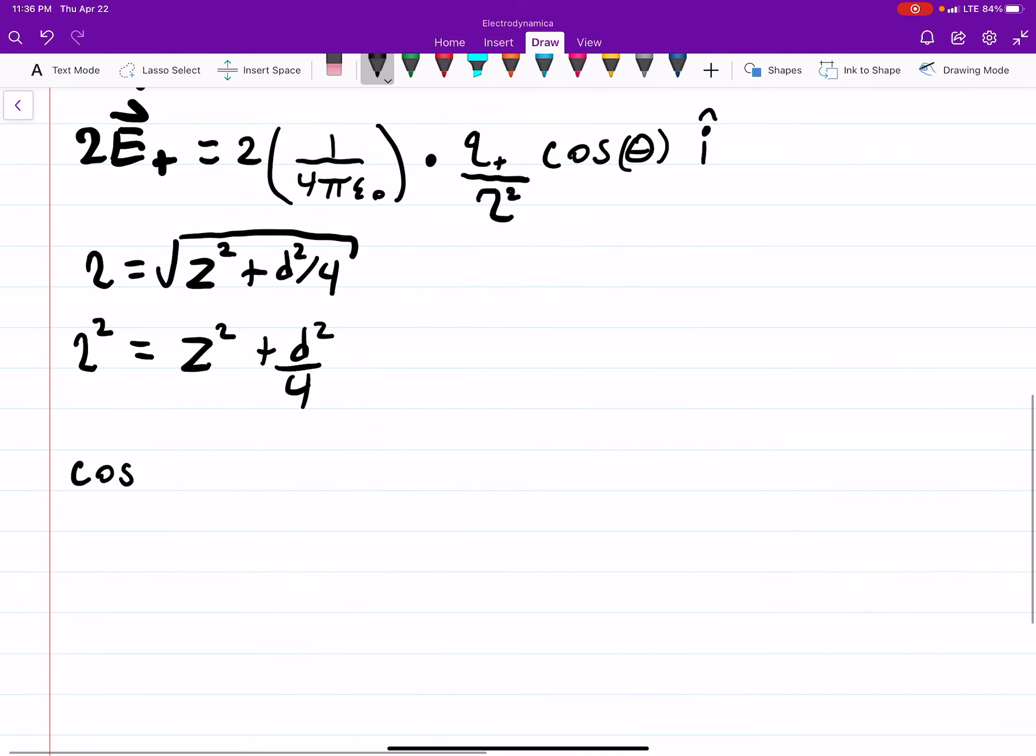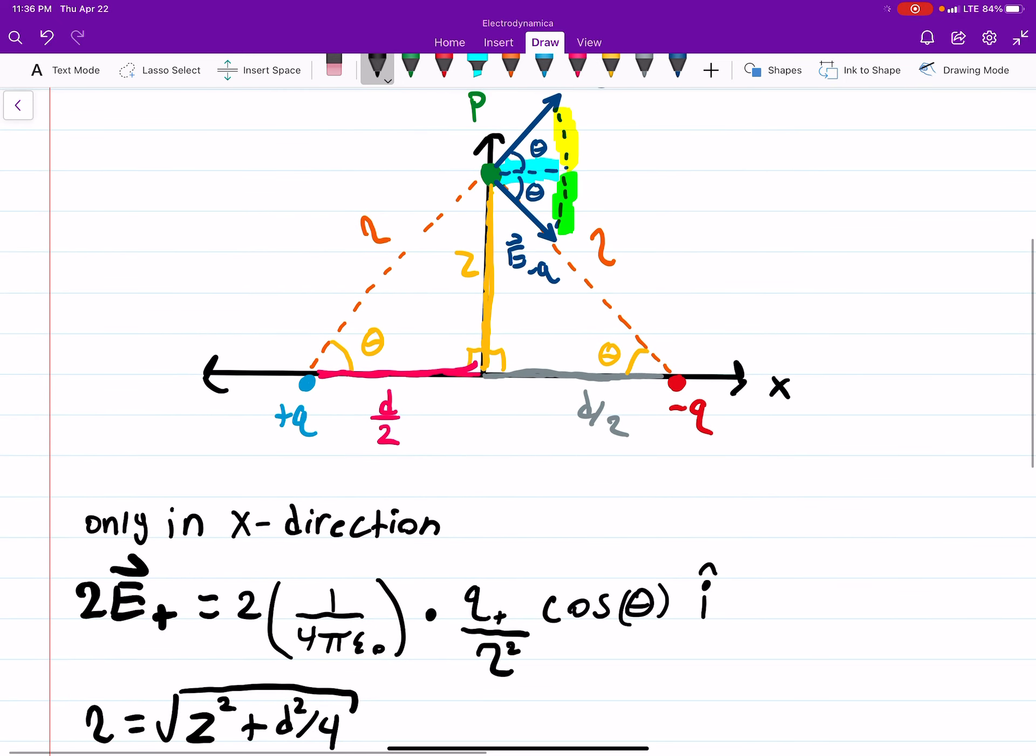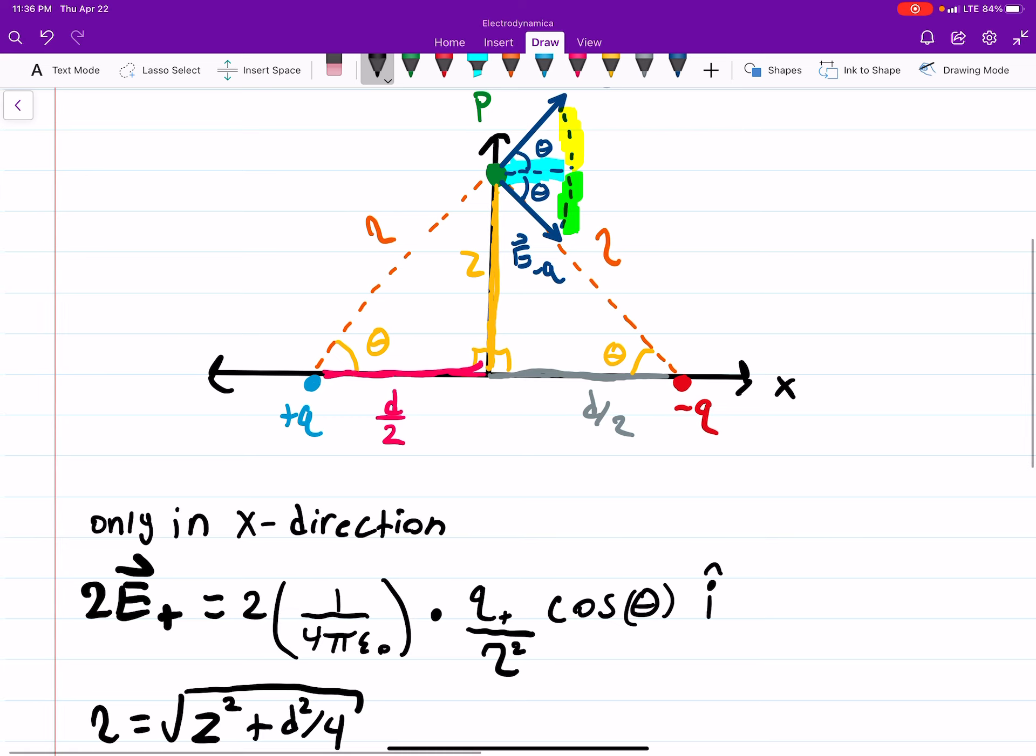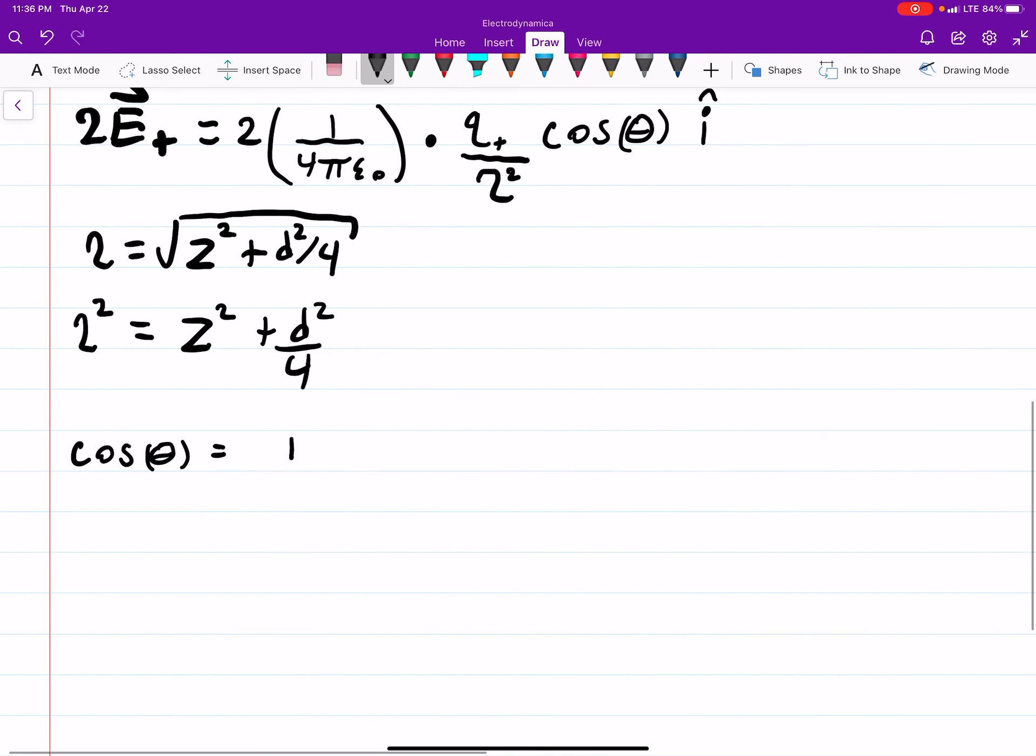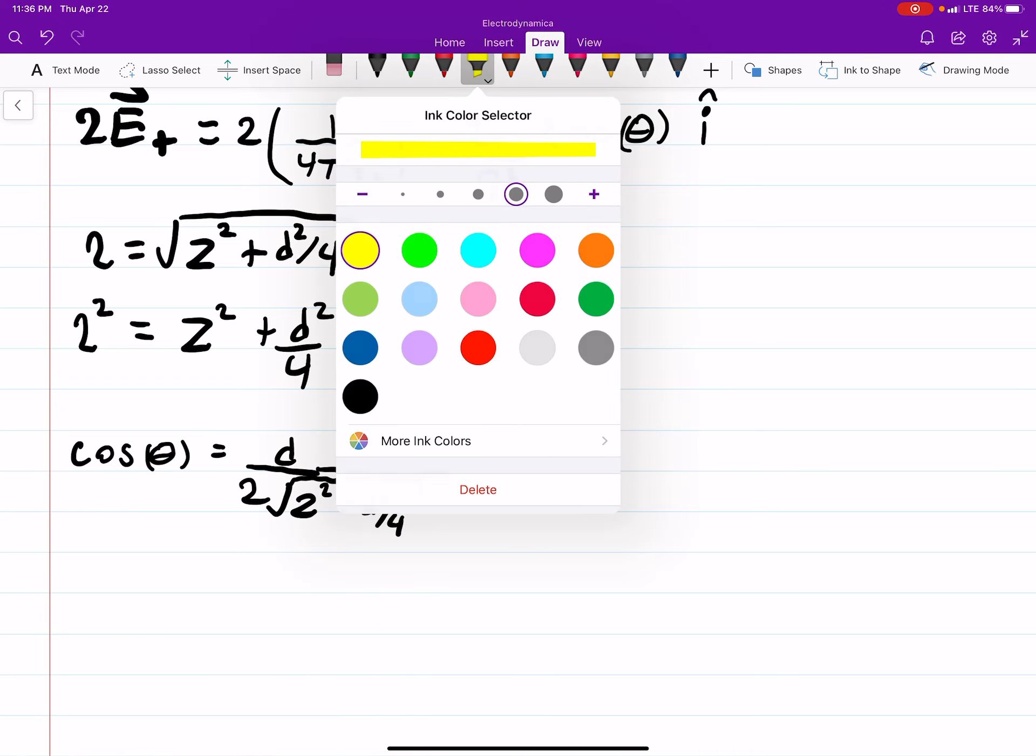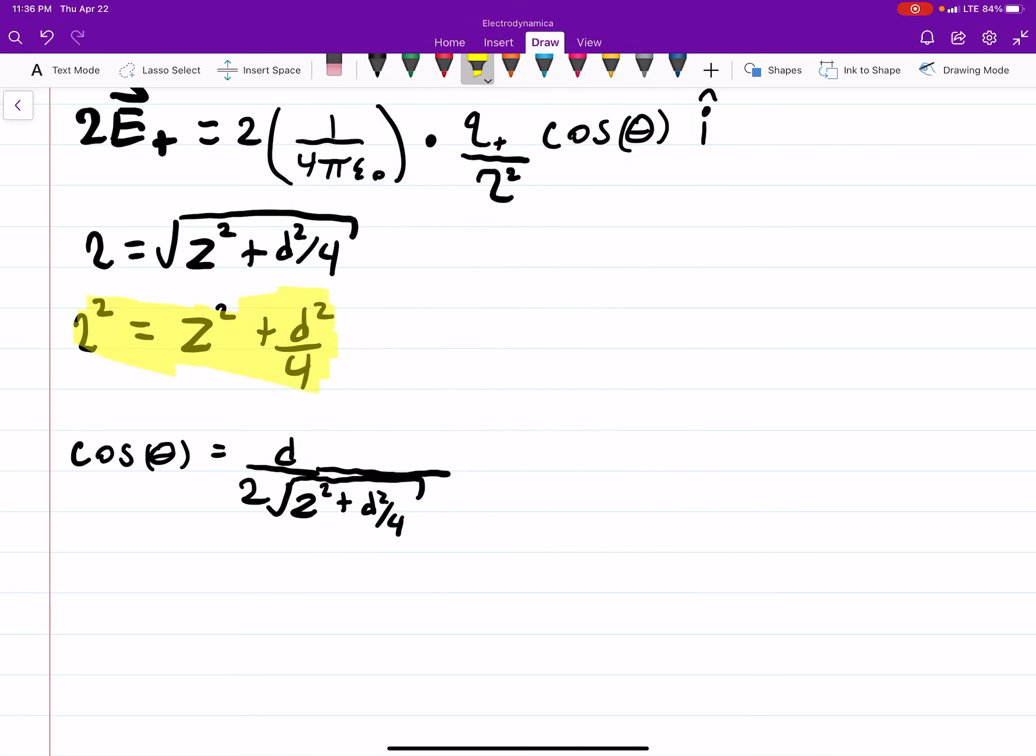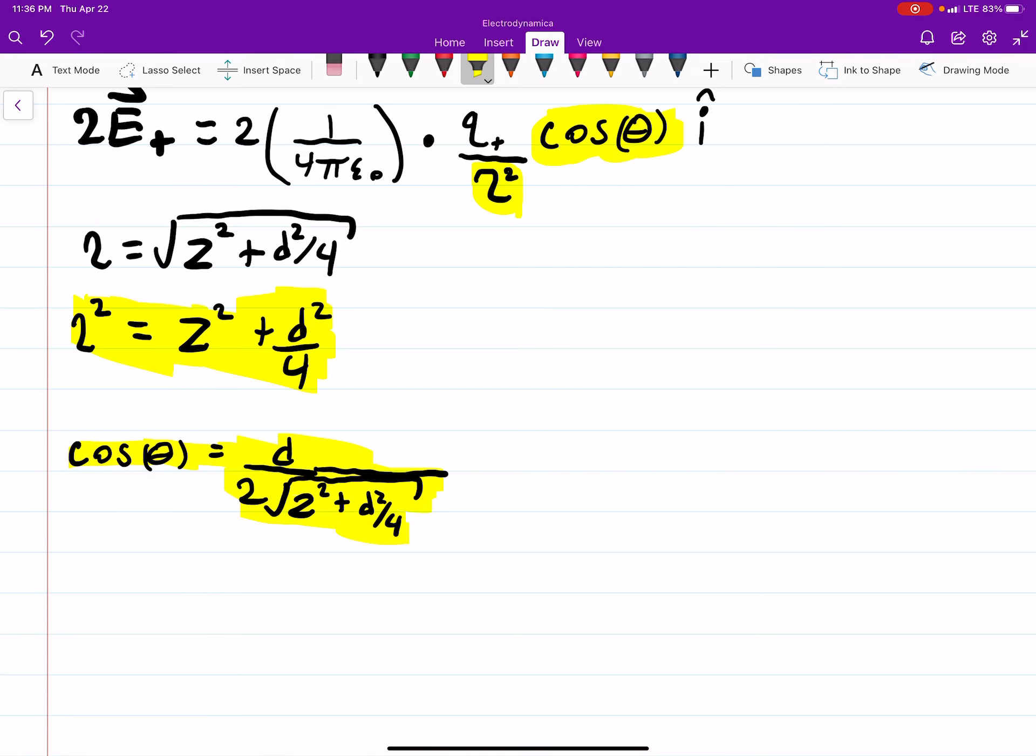And as for the cosine theta, we'll represent that as... It doesn't matter which one, but let's look at the left-hand side. Cosine is adjacent over hypotenuse. So cosine theta will be d over 2 over the square root of z squared plus d squared over 4. So with that in mind, we can plug these in. We can plug in R squared is this to here and cosine theta being this to here. And we have everything that we need.